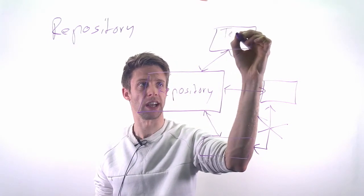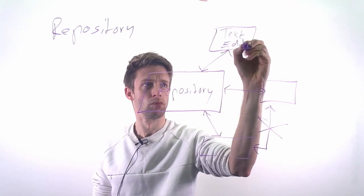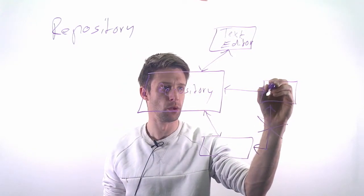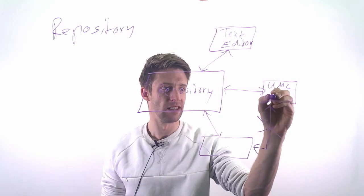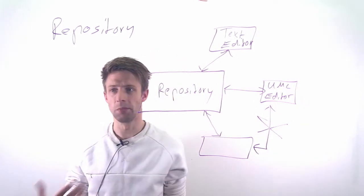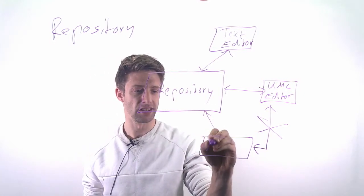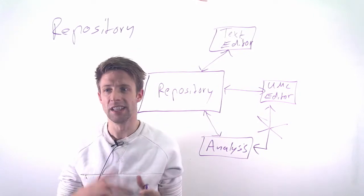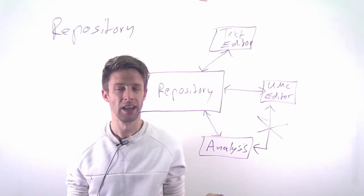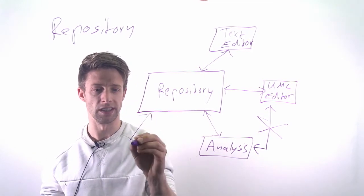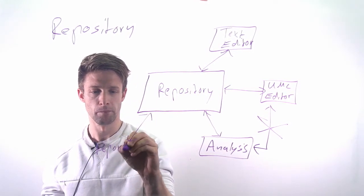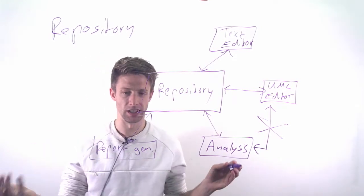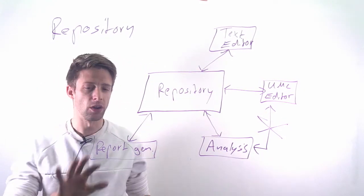So, for example, you might have the actual text editor. You might have another editor, for example, maybe depending on your tool, it might be that you can also do UML drawing if you have something like Eclipse. You might have a certain analysis tool, for example, a linter that works on the code and checks whether the style is correct, whether there are any bad smells. And you might have other things, for example, some kind of report generation for test coverage or comment percentage in the code.